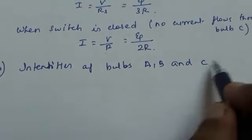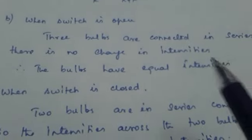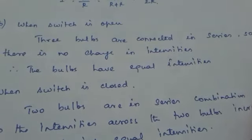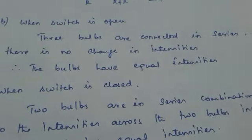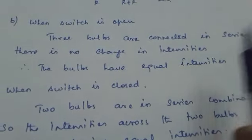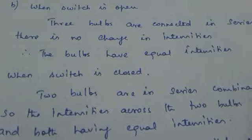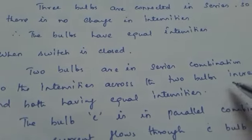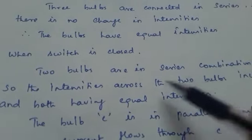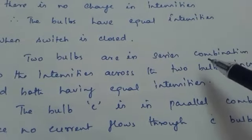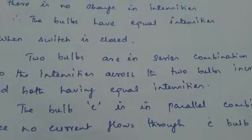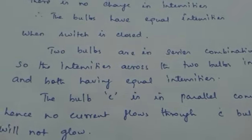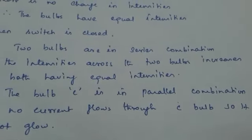For part B, we examine the intensities of bulbs A, B, and C. When the switch is open, all three bulbs are in series, so they have equal intensities. When the switch is closed, only bulbs A and B are in series — their intensities increase and they remain equal to each other. Bulb C is in a parallel combination with the switch, so no current flows through it and it will not glow.